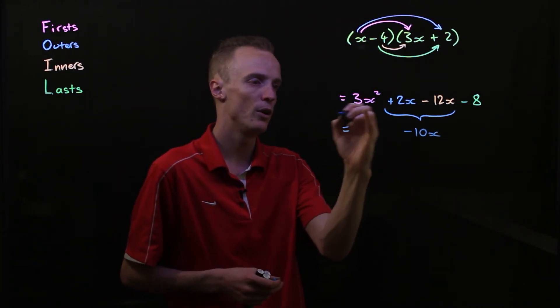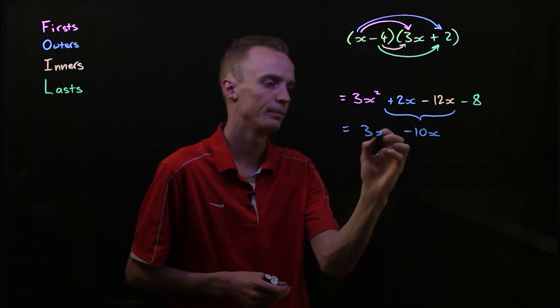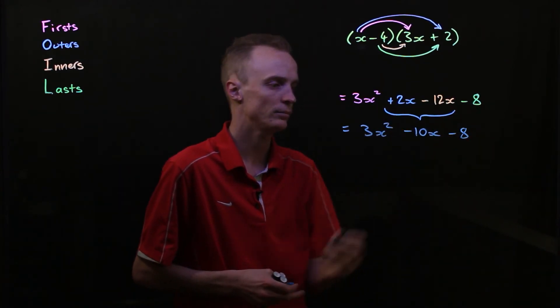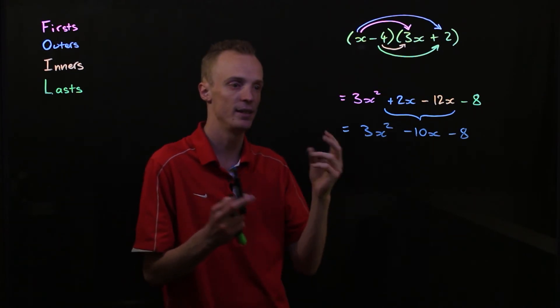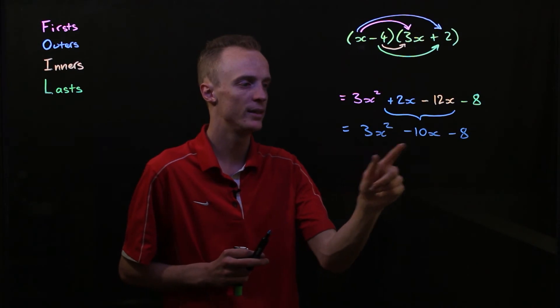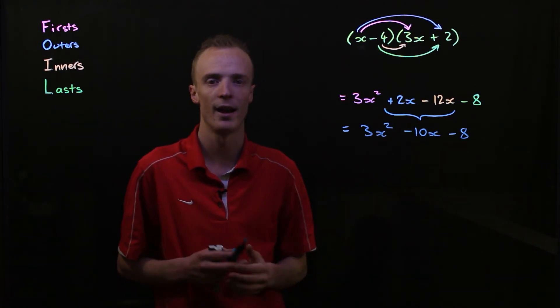But I've still got my 3x squared, and I've still got my subtract 8. So when I expand and then simplify this up here, I'll be remaining with 3x squared, minus 10x, subtract 8.